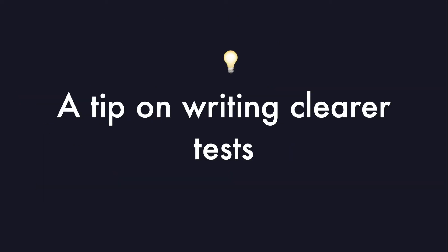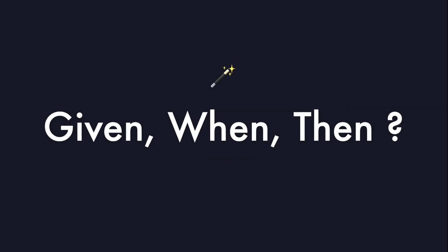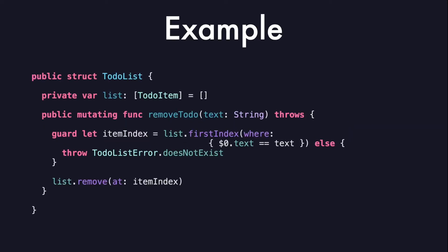Now I want to share a very simple tip that is immensely helpful for writing clearer tests: the three magical words — given, when, then. Let's look at a sample code and implement the tests. This method implements the feature to remove a to-do. Of course, we can only remove the to-do item if it exists. If it doesn't exist, we throw an exception with a custom error. This method already has one single responsibility, so it should be easy to test.